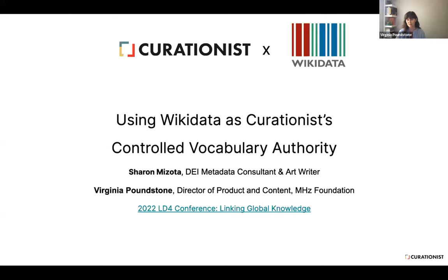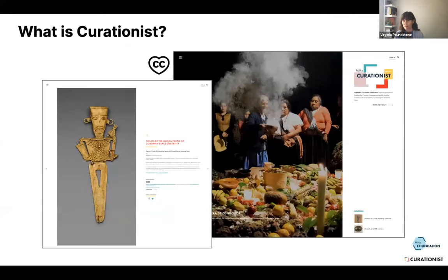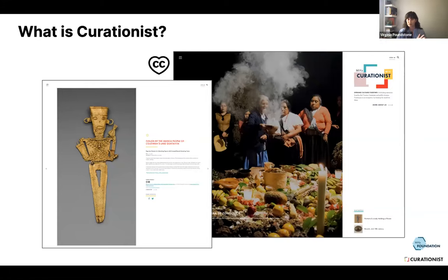So what is Curationist? Curationist is a nascent platform for reimagining cultural heritage. We work to reimagine cultural narratives through curated collections and research-based editorial articles. In order to accomplish this, we need to be able to easily find, sort, organize, and curate content. There's a lot of issues with the diasporic nature of all this open knowledge content that exists in the cultural heritage realm. We needed to create curation tools so it would be easy for our researchers to find materials. Our first solution was to create an aggregated database of as many open access collections as we could — we currently have 4.4 million work records from nine different open access institutions, all museums at this point.